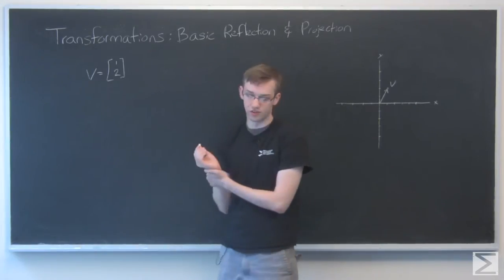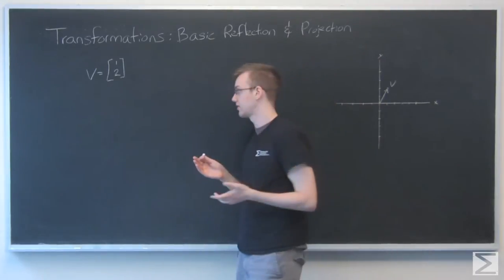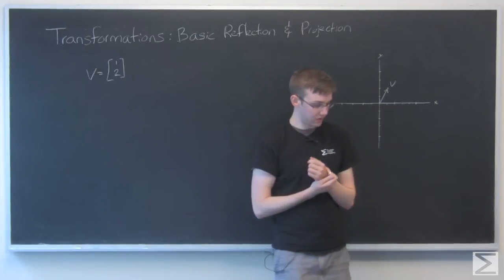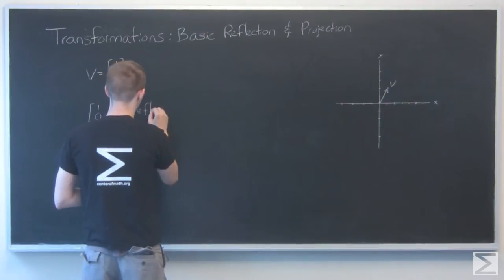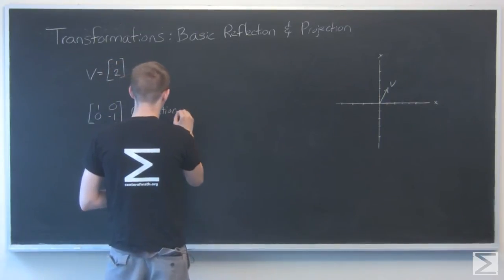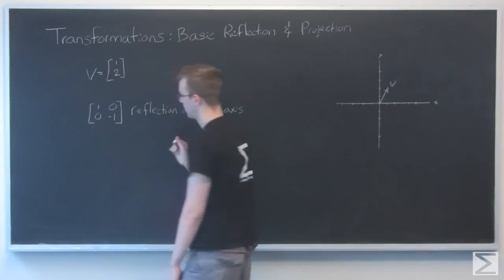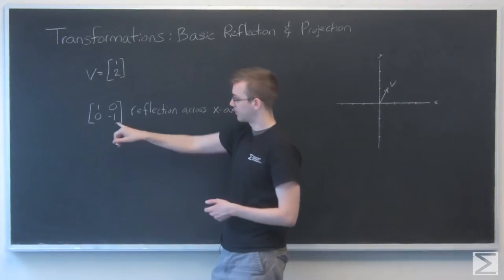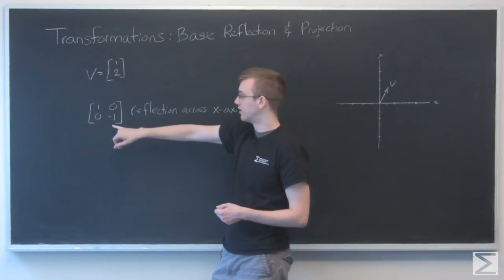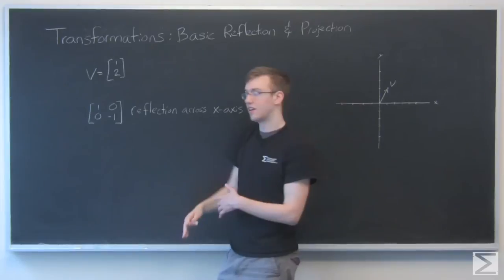So let's start with reflection. The first example we're going to look at is reflection across the x-axis. And that is represented by the matrix 1, 0, 0, minus 1. Notice that it's almost exactly the same as the identity matrix except for this which is negative 1. And what that'll do, that'll just flip the minus sign on our y-value, therefore flipping it across the x-axis.